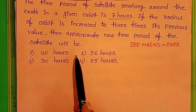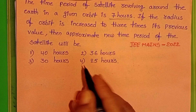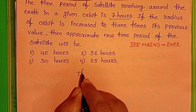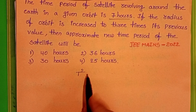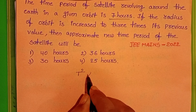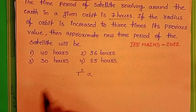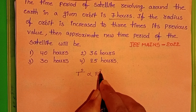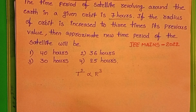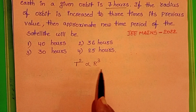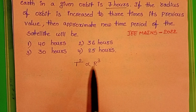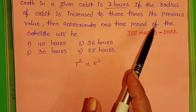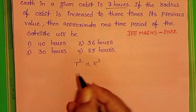We know Kepler's law of periods: the square of the time of revolution is directly proportional to the cube of the radius. Using this relation, find out the new time period.